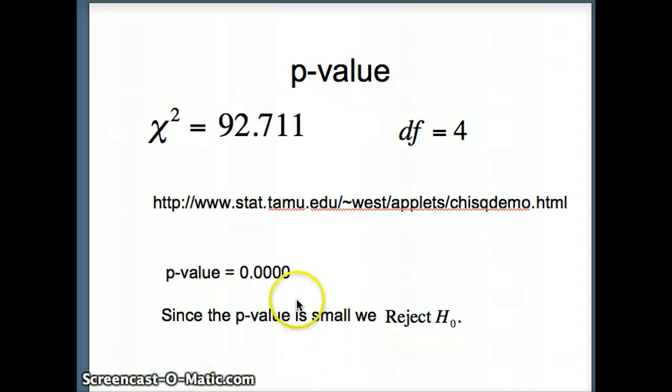Our p-value is very, very small. And when the p-value is small, we have to reject H₀.